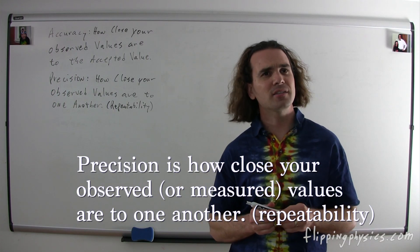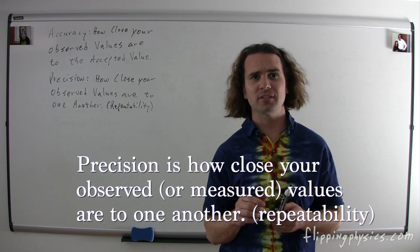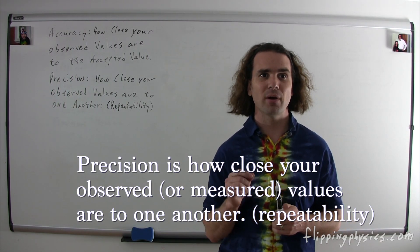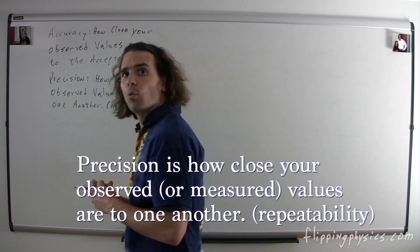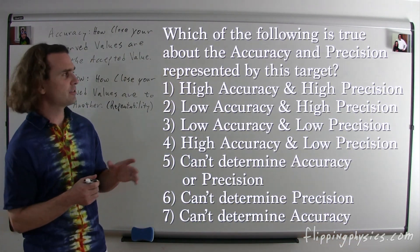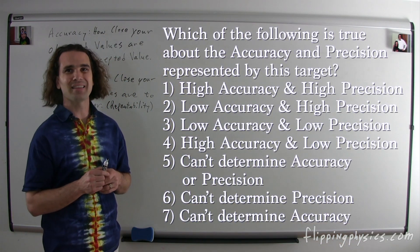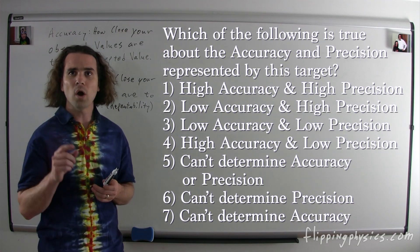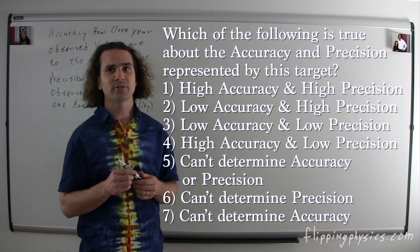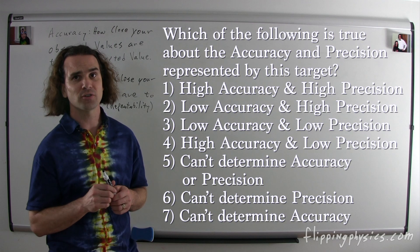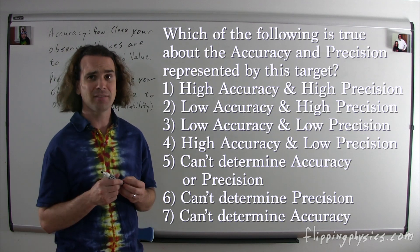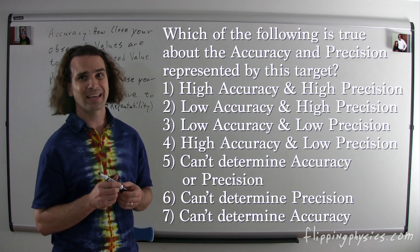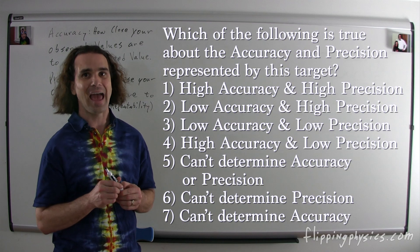If you can get a similar result each time, then your experiment is precise. I thought precision was how many numbers after the decimal your number had. Isn't that right? Yes Bobby, that is another definition of precision. However, that's not the one we're going to be using right here when we're talking about accuracy versus precision. Now, let's go through some examples and discuss accuracy and precision. All of these examples will have the same question and that question is, which of the following is true about the accuracy and precision represented by this target?